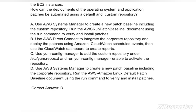Option C: Use YUM Config Manager to add the custom repository under /etc/yum.repos.d and run YUM Config Manager enable to activate the repository. Option D: Use AWS Systems Manager to create a new patch baseline including the corporate repository, then run the AWS Amazon Linux default patch baseline document using the Run Command to verify and install patches. The correct answer is option D.